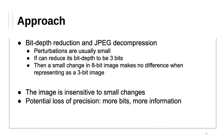The second transformation is bit depth reduction, and JPEG compression shares the same idea, so they are discussed together. Since perturbations are usually small, if we reduce the image bit depth to three bits — originally eight bits — a small change in the eight-bit image makes no difference when represented as a three-bit image. So the image becomes less sensitive to small changes. The tradeoff is potential loss of precision since we reduce the number of bits representing the image.